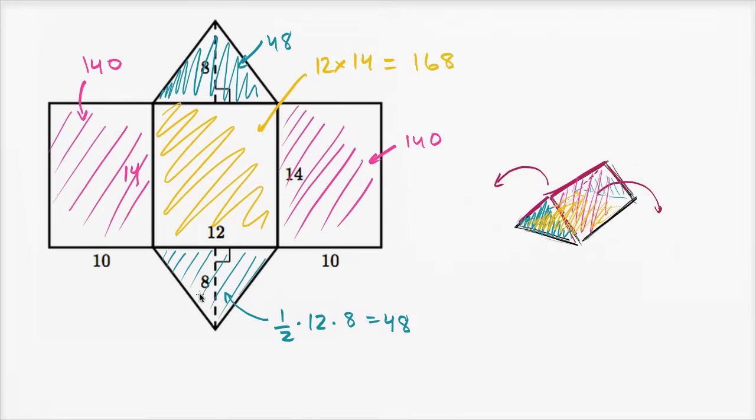So the total area is going to be, let's see, if you add this one and that one, you get 96 square units. The two magenta side panels, 140 plus 140, that's 280. And then you have this base that comes in at 168.